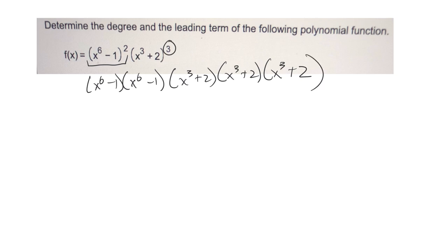Now you could just foil all this stuff out, but that would take you a long time. What you could do is just look at these and say, well, if I multiply this by this, I'm going to get an x to the 12th and then some other stuff. But if they're wanting to know what the leading term is and the degree, really I'm just looking at what the highest degree is.